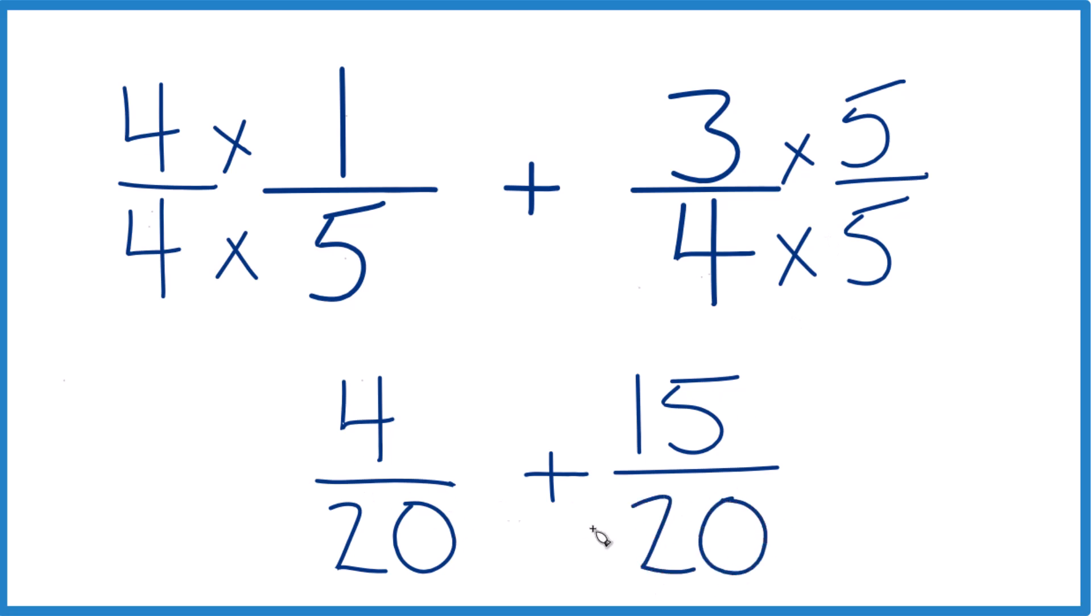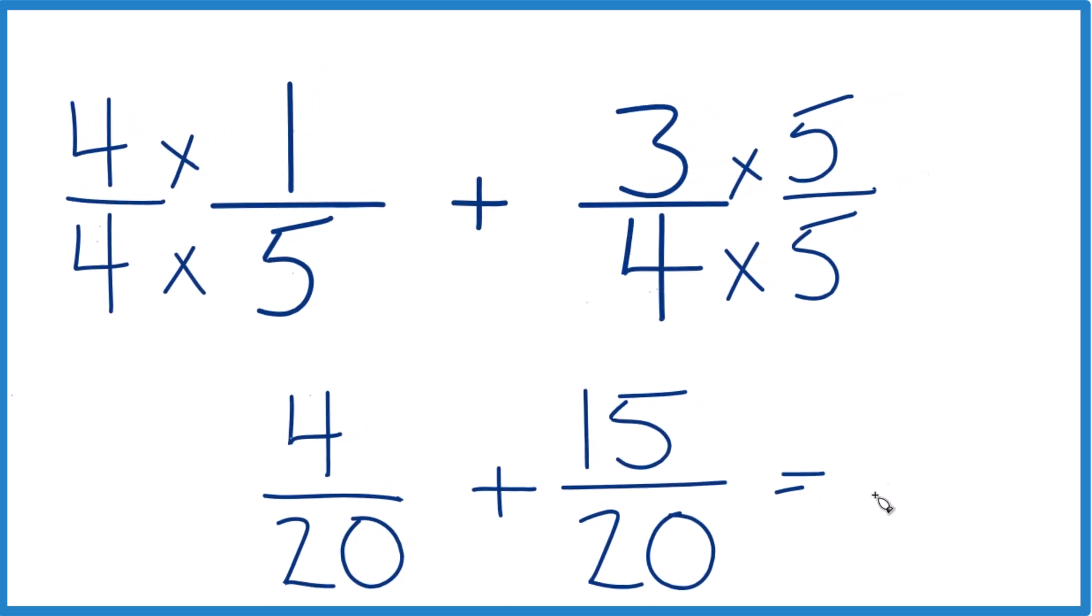So we'll keep the denominator the same and just add the numerators. 4 plus 15, that is 19.